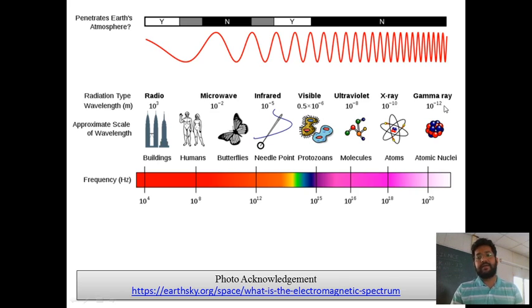In the same manner, the gamma ray is having a very very low wavelength and therefore its frequency is enormous. It's huge. So this is the electromagnetic spectrum.